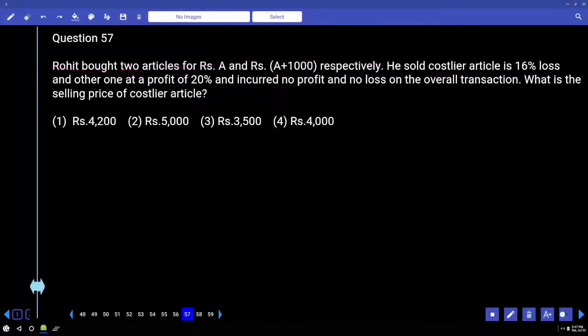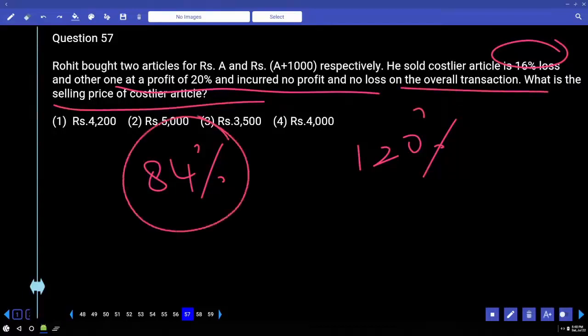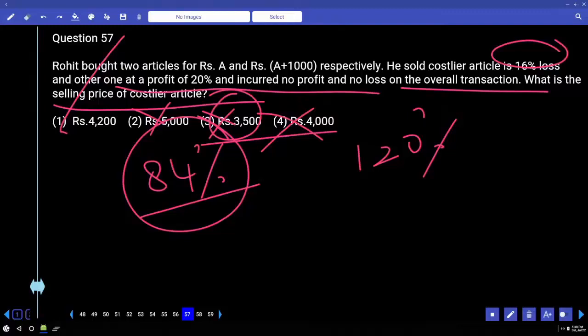Rohit bought two articles A and B respectively. He sold costlier article at 16% loss at 84% and the other one at 20% profit and incurred no profit no loss on the overall transaction. What is the selling price of the costlier article? Actually costlier article is sold for 84%. So our answer must be 7 and 12 multiple. 7 and 12 means 7 and 6. How do you say 7 and 6 multiple? First option, that's all. 4200. This is 7 and 6 multiple. If you have 7 multiple, it's not 6 multiple. If you have 6 multiple, it's 3 multiple. How do you have 3 multiple? 3 plus 5, 8 is 3 multiple. So option 1 is the correct answer.